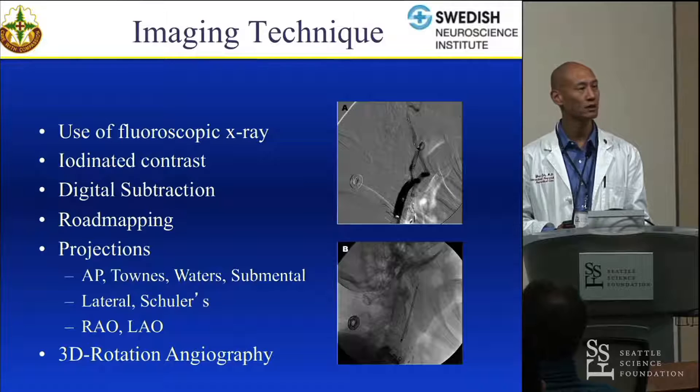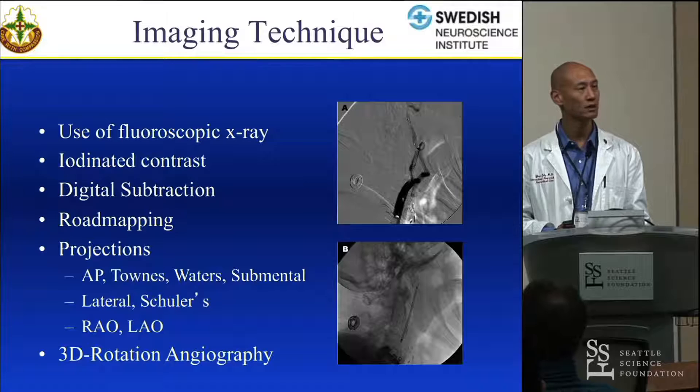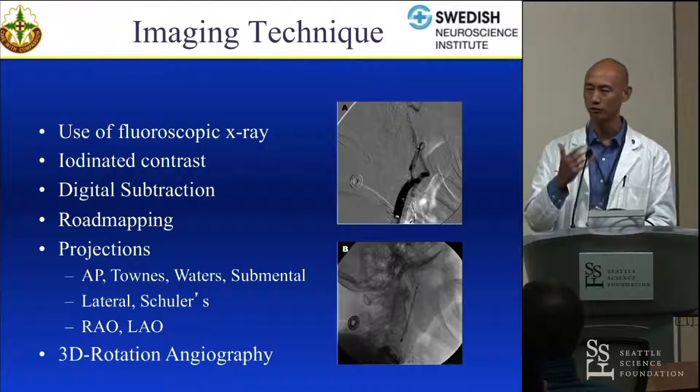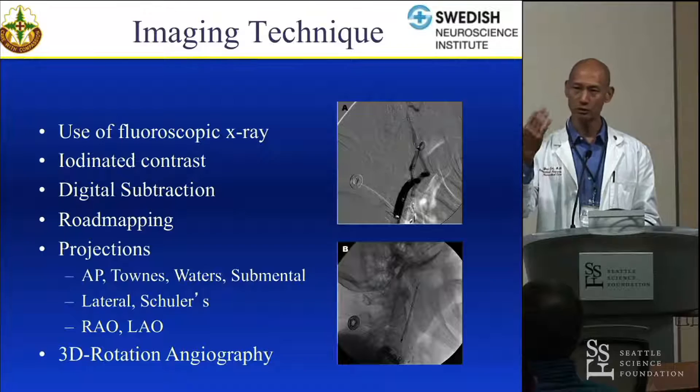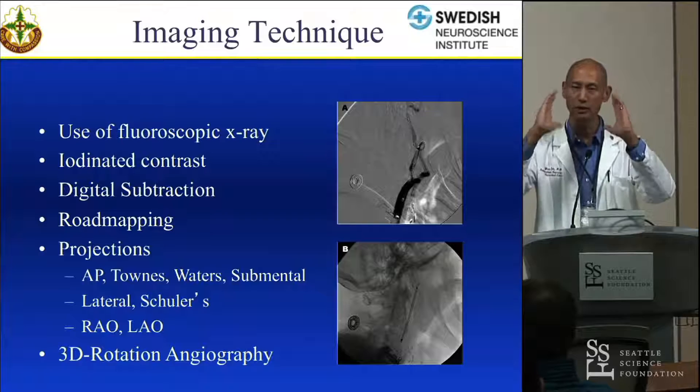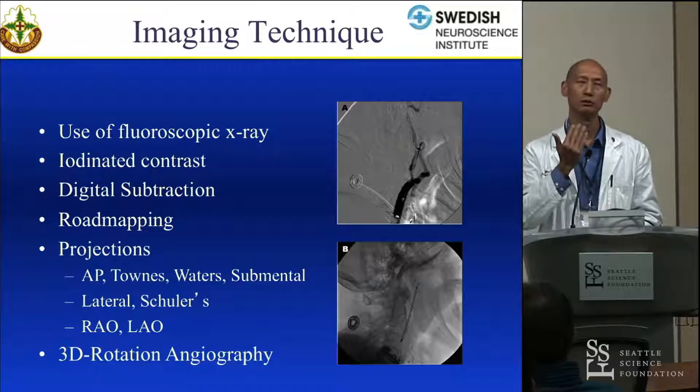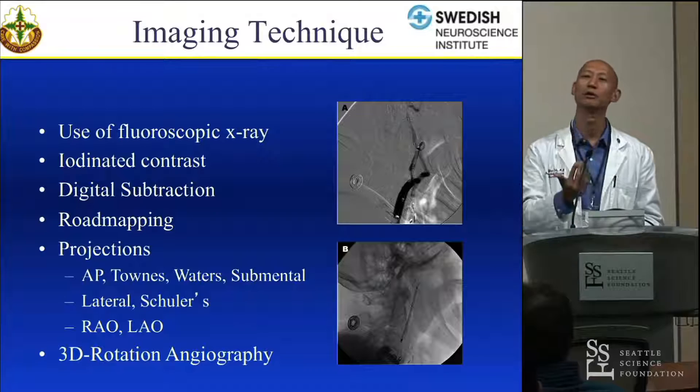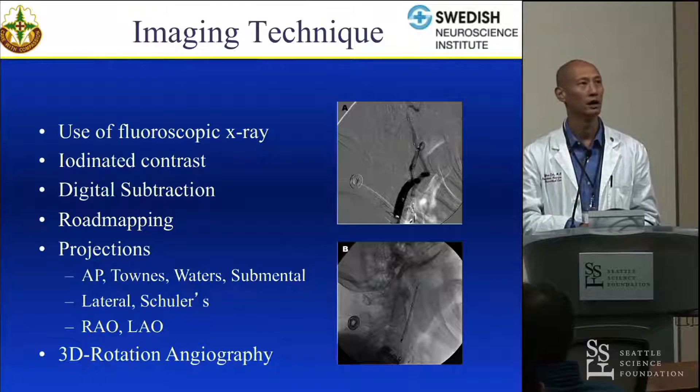Projections I'll talk about during this talk: standard transorbital frontal AP (anterior-posterior), more of a Towne's view normally with cranial views. We often say AP, but we're really talking about more of a Towne's view, where you're laying out the vessels since they're all running in the same plane — you want to see them off of each other, so a Towne's view will bring those off. Waters view and submental views are things I'll also talk about. For instance, if you're looking for an anterior communicating, you want to look from below to above — you'll use a submental view.